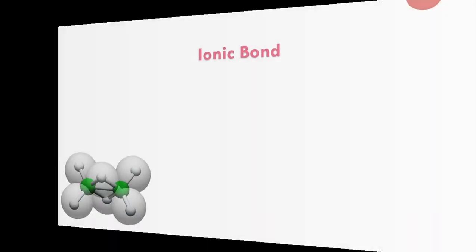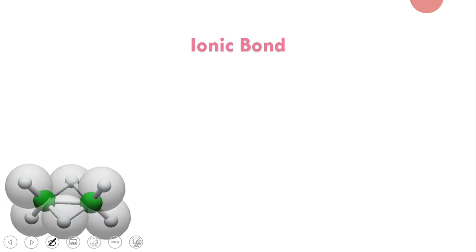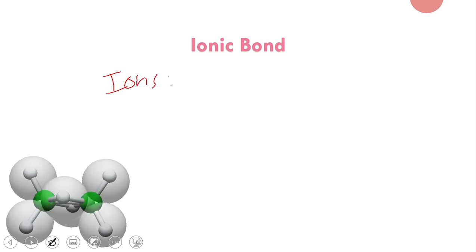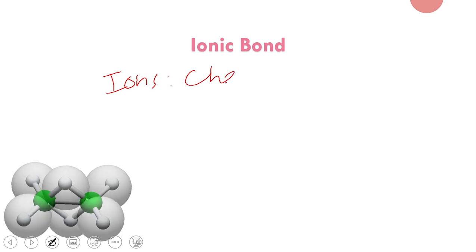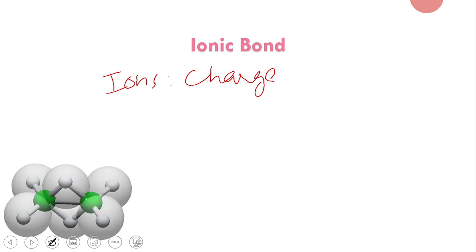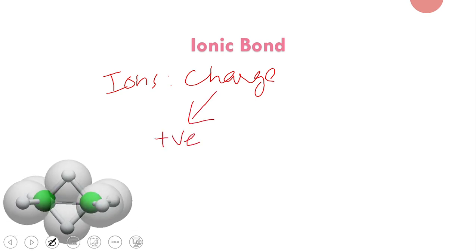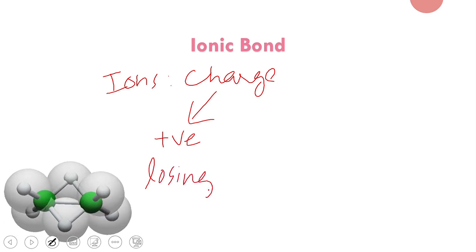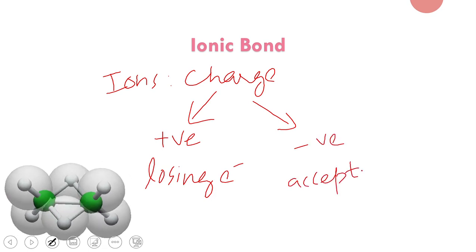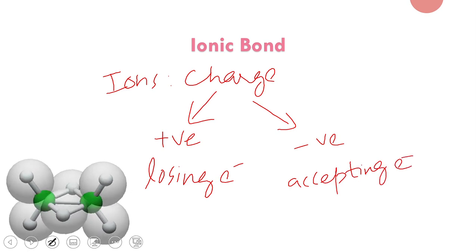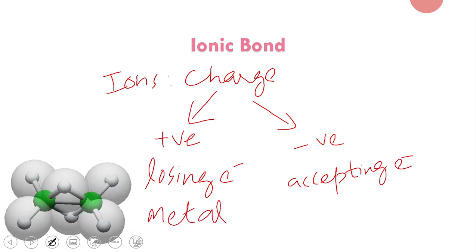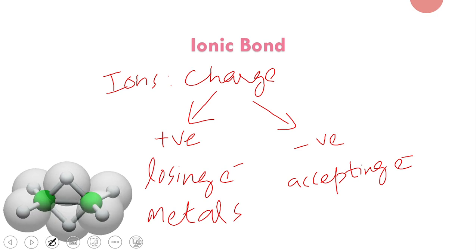The first one is ionic bond. In your first chapter you studied in detail what ions are. Ions are any species that carry a charge — it can be a positive charge, which is formed by losing electrons, or a negative charge, which is formed by accepting electrons. The positively charged species are called metals and the negatively charged species are called non-metals.